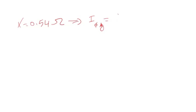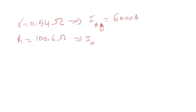Option two was to add a neutral grounded resistor, and we calculated the required resistor to be 100.6 ohms in order to limit the phase-to-ground fault current to 6,000 amps. So you can see, to get the same results, the reactor value versus the resistor value are quite different.